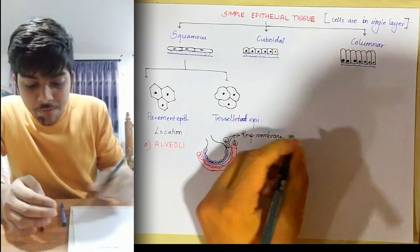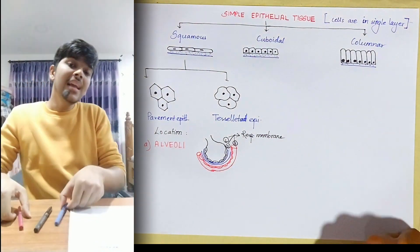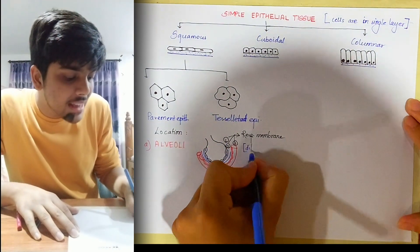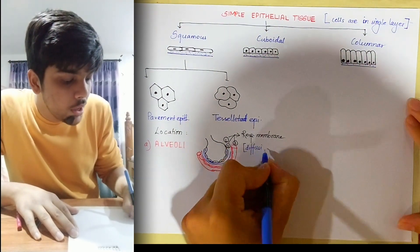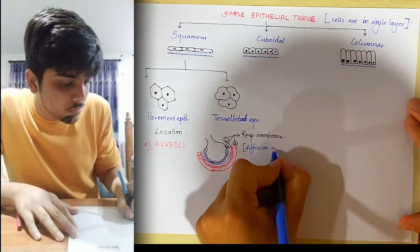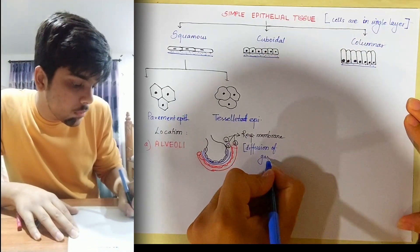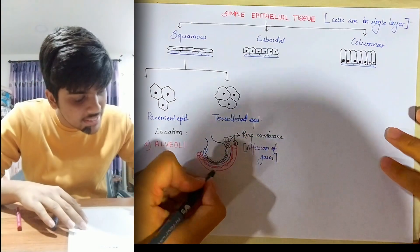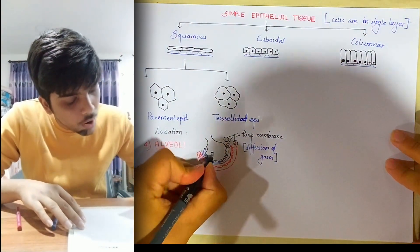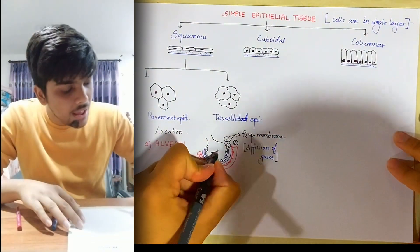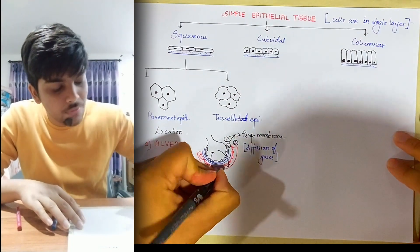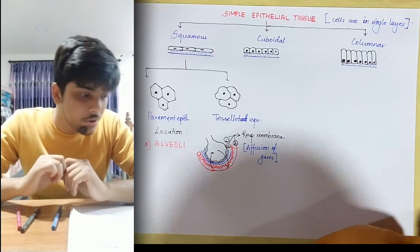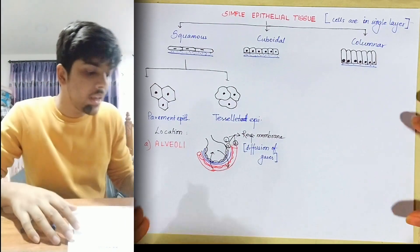The significance of the respiratory membrane is that it is through this membrane that diffusion of gases takes place during respiration. So gases get exchanged between the blood of the capillary and the alveoli. How it occurs will be discussed in the chapter on the respiratory system. That was A.